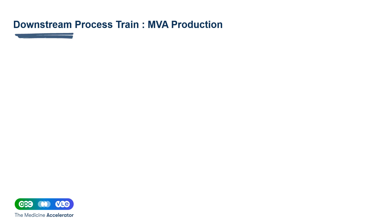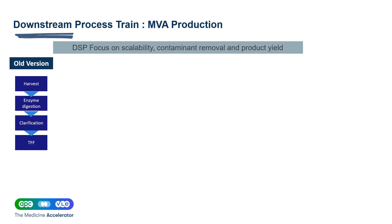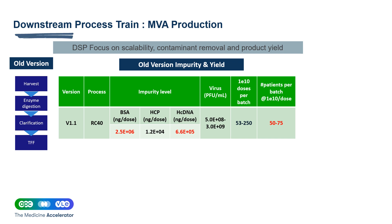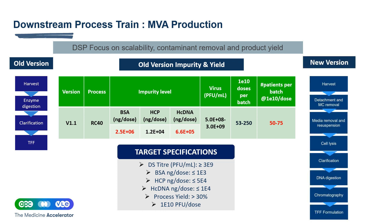Moving to the downstream process for MVA production, the main focus is developing a process that is scalable, further reduces process impurity, and maintains high viral recovery. The old version provided by the client was short and simple — fit for purpose at the particular clinical phase — however, process impurity levels required further improvement to meet the target specifications defined by the clinician. Further process development was carried out at APC, and a new downstream process train was developed incorporating additional steps to accommodate the microcarrier-based upstream and to further reduce process impurity.